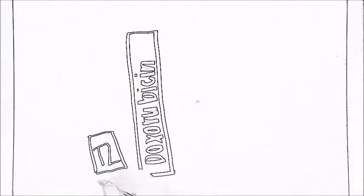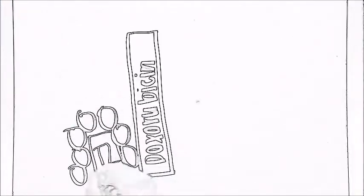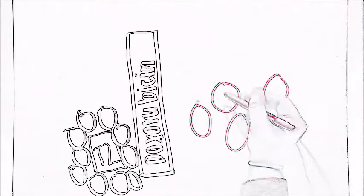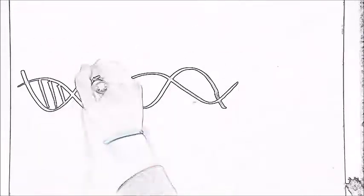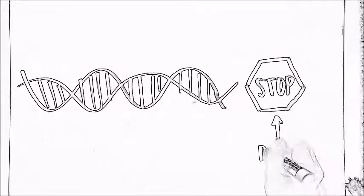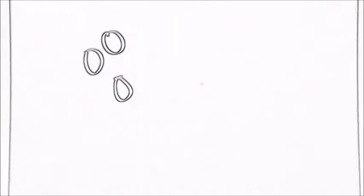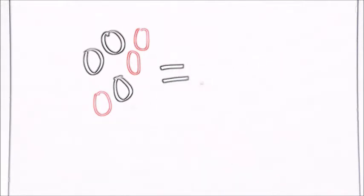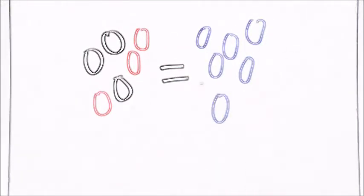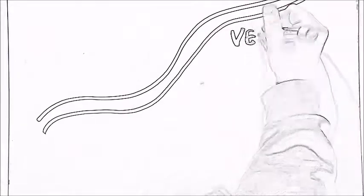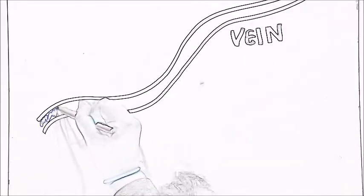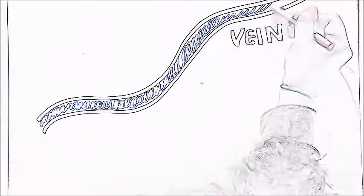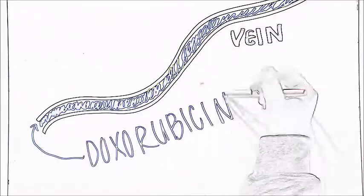It may work by blocking the enzyme topoisomerase 2 that cancer cells need to keep dividing, or by damaging the DNA that tells the cell to keep dividing. Doxorubicin cannot tell the difference between cancer cells and normal cells. This is what causes the extreme side effect. It is classified as a vesicant, meaning that if it escapes from the vein, it will cause major tissue damage and blistering.